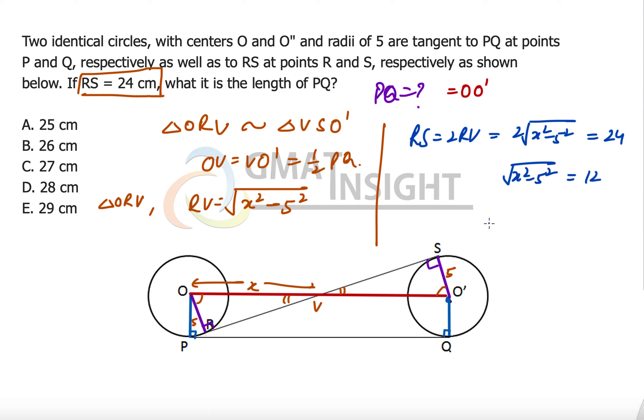Now we have to just simplify this. So I am taking a square both sides so we have x square minus 25 is equal to 144. Now we just need to simplify this so x square becomes 144 plus 25, x square is equal to 169. That means x is equal to simply 13 because 13 square is equal to 169.